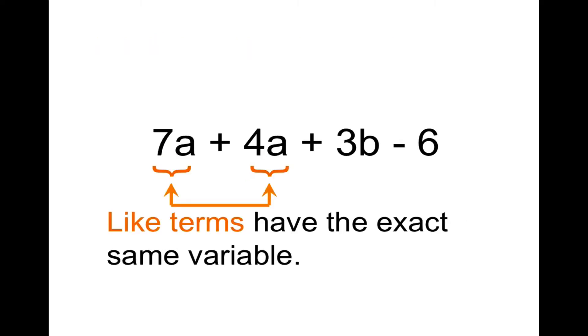Next are like terms, our last definition. Like terms are terms that have the exact same variable. By that, I mean it's the same letter but also the same power. If you have different powers of a variable, then they are not like each other, they are different. Like terms are the ones that we can add together.